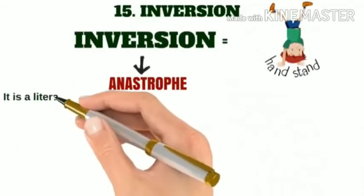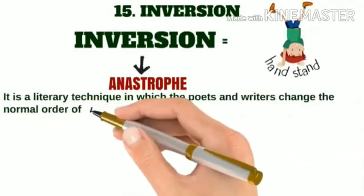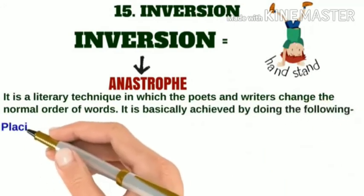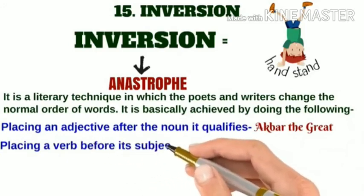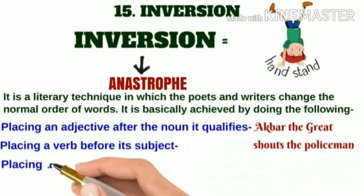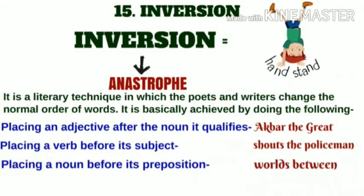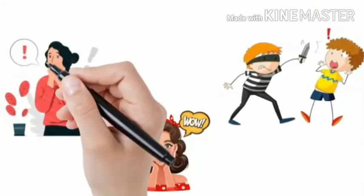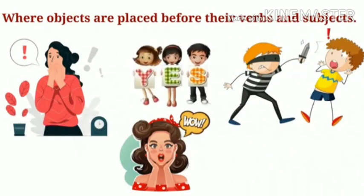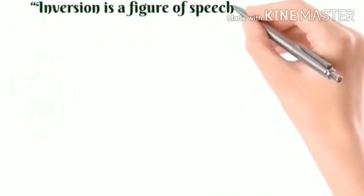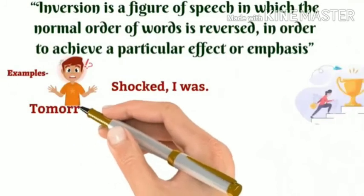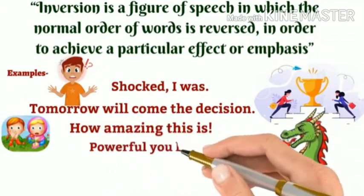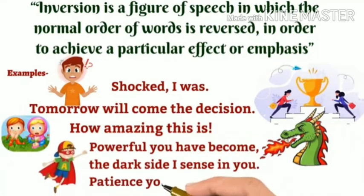Inversion means reversal of usual order — it's also known as anastrophe. It is a literary technique in which poets and writers change the normal order of words, achieved by: 1) Placing an adjective after the noun it qualifies, e.g., 'Aqwa the great.' 2) Placing a verb before the subject, e.g., 'Shouts the policeman.' 3) Placing a noun before the preposition, e.g., 'Words between.' Inversion is a figure of speech in which the normal order of words is reversed to achieve a particular effect or emphasis. Examples: 'Shocked I was.' 'Tomorrow will come the decision.' 'How amazing this is.' 'Powerful you have become, the dark side I sense in you.' 'Patience you must have, my young hero.'